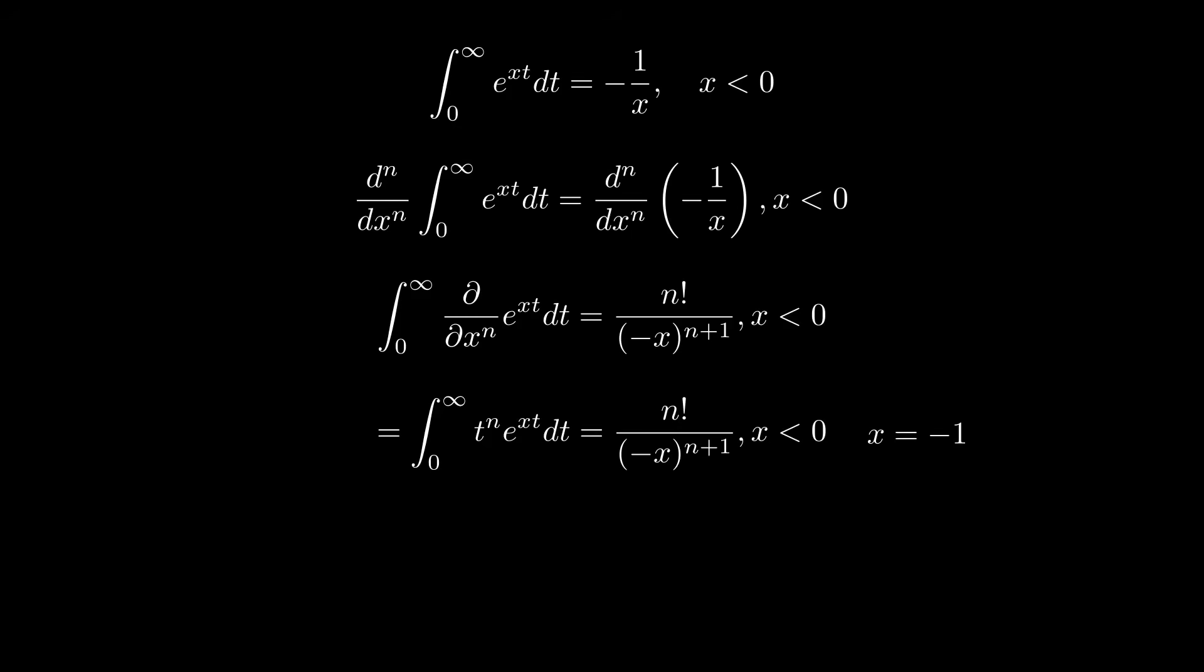When we do that, the denominator on the right-hand side disappears. We just get n factorial. And on the left, there it is, the gamma function. I should note here, we only technically proved this for natural number n, not all the numbers we were looking for. But it does happen to work out.